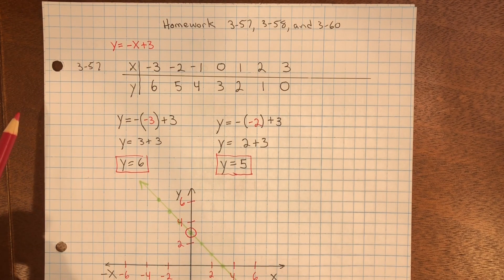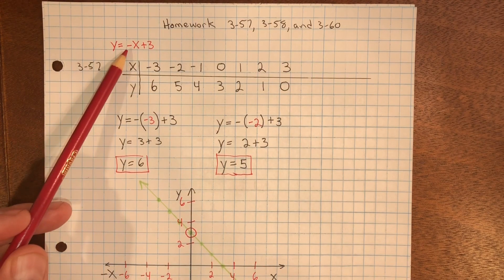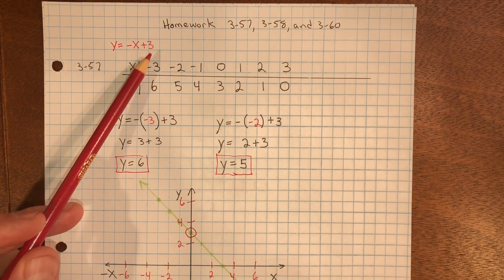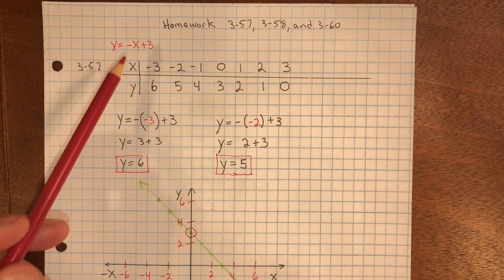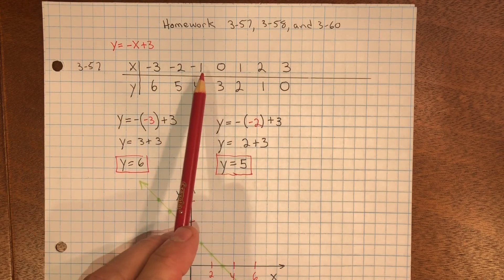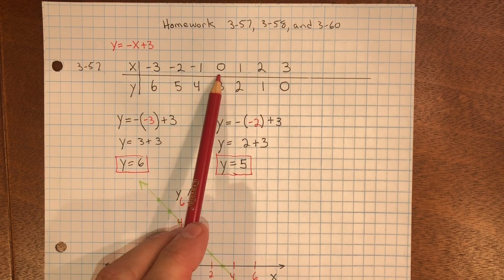In problem 357, you need to complete a table for the rule negative x plus 3, then plot and connect the points on the graph. I've chosen several negative values, several positive values, and 0.